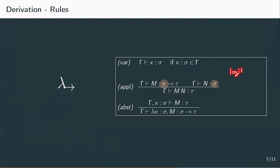Lastly, the abstraction rule says that if we have a context containing some declarations in gamma and the declaration 'x is of type sigma', and this context yields that m is of type tau, then we can derive that gamma yields that the abstraction lambda x of type sigma dot m is of type sigma to tau. So whenever we have a term m of an arbitrary type and in our context we have that x is also of an arbitrary type, we can abstract x from m and get an abstraction of the corresponding type.